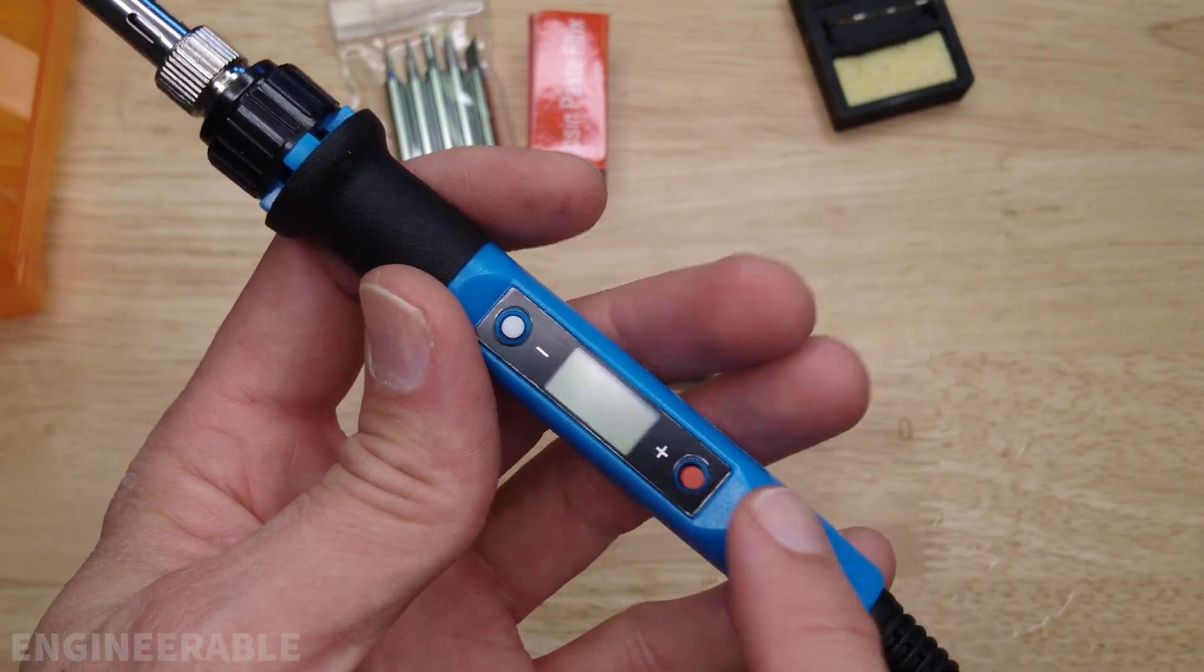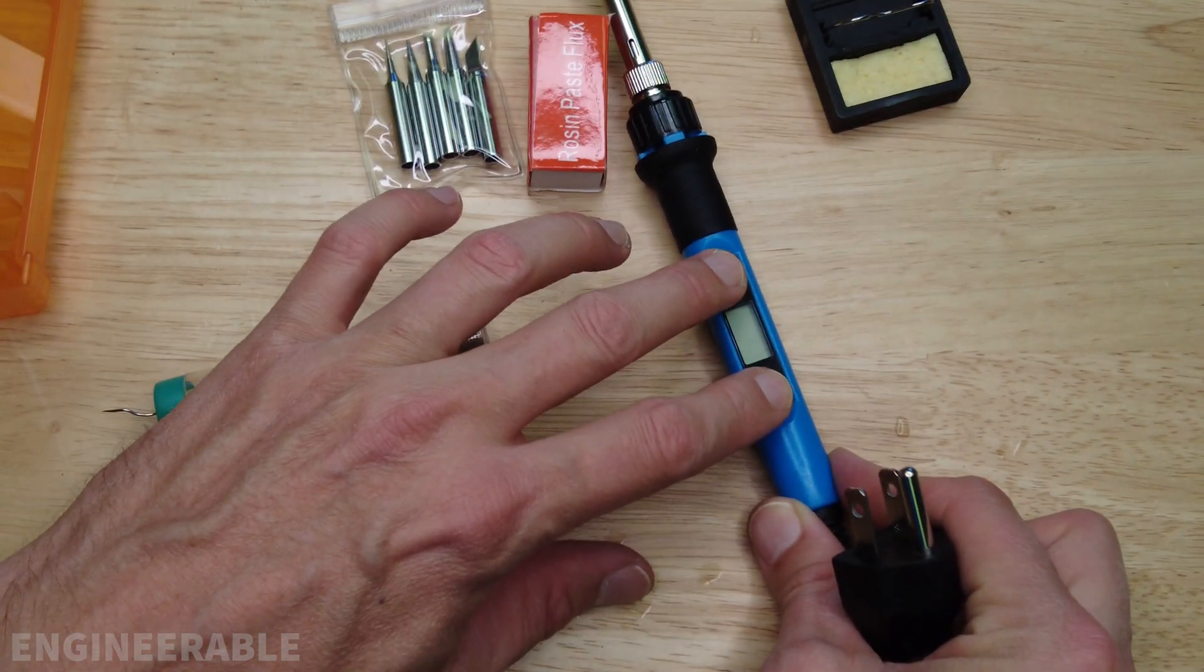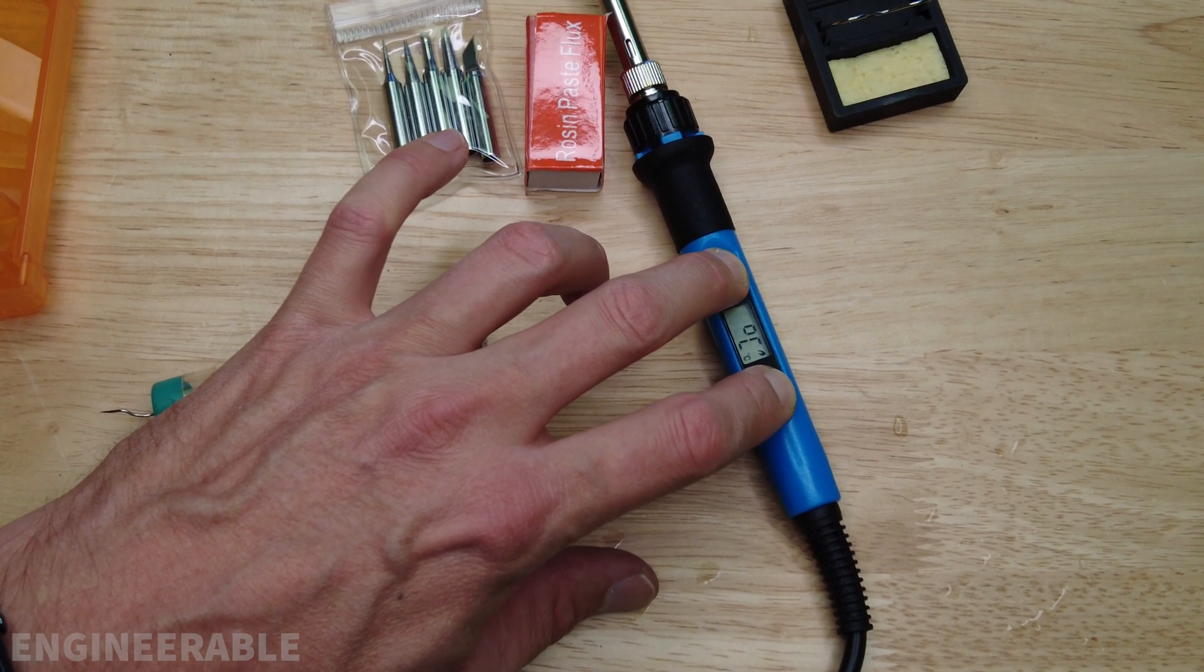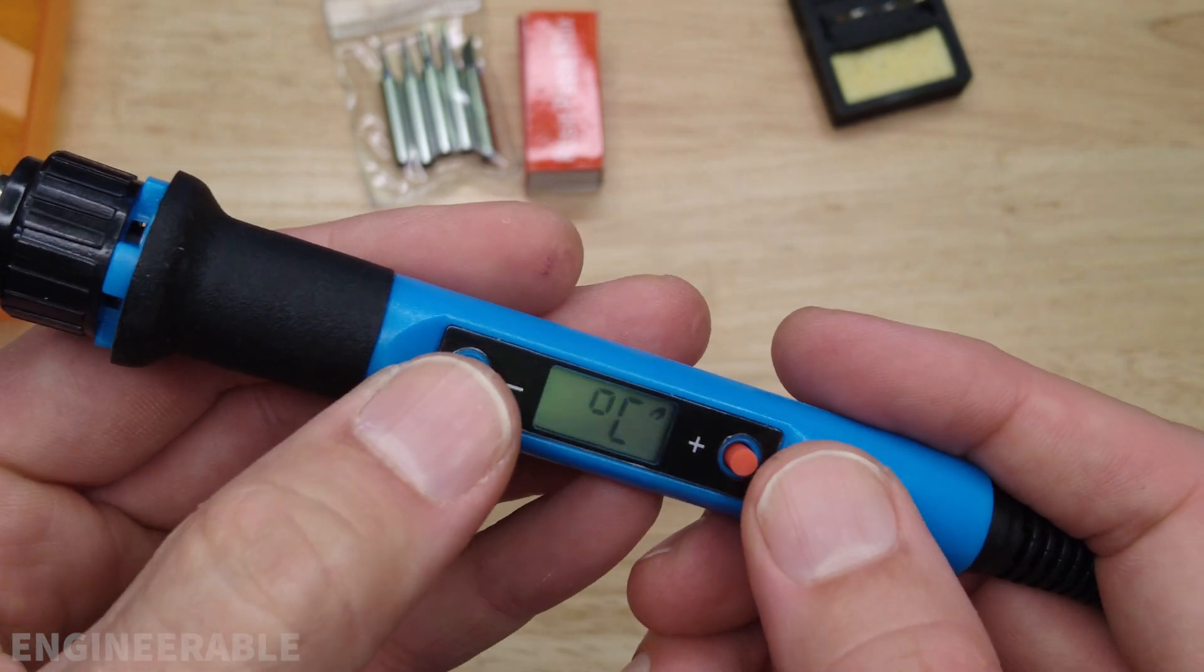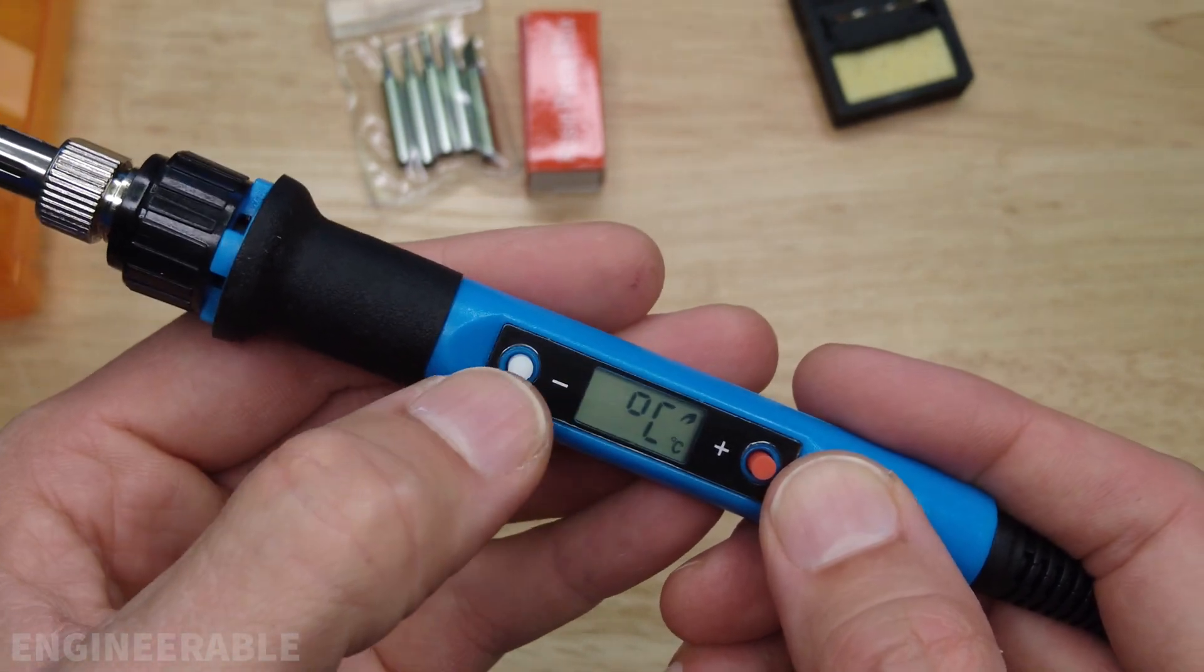To change the display from C to F it says to push both buttons while plugging this in which can be a little bit tricky if you've only got two hands and you're plugging it into an extension cord. So now it gives you the option of degrees C or degrees F. The white button switches back and forth between degrees C or degrees F. I'm going to go to F because I'm more used to that.